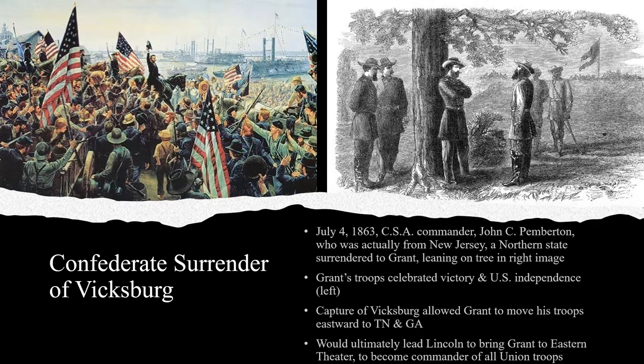The defeat of the Confederates at Vicksburg did three things. First, it gave the Union undisputed control of the Mississippi River, dividing the Confederacy in two. Second, the Union victory freed up Grant's troops — the Army of the Tennessee — allowing them to be transferred to the fighting in eastern Tennessee and northern Georgia. Third, Grant's success at Vicksburg and throughout the rivers of the Western Theater eventually convinced Lincoln to promote Grant to General-in-Chief and to bring him to fight in the east. The loss of Vicksburg was a major turning point in the Civil War.